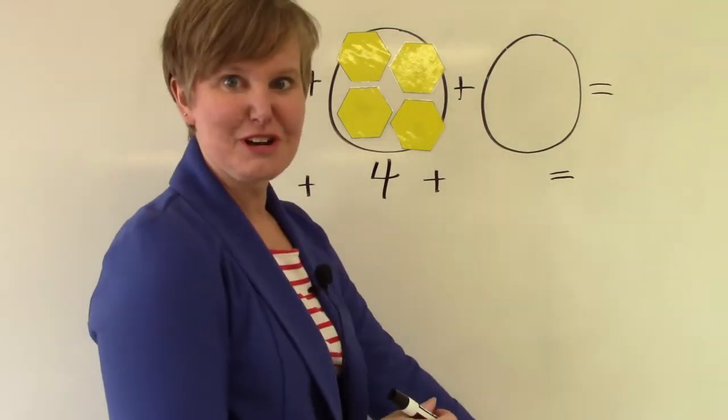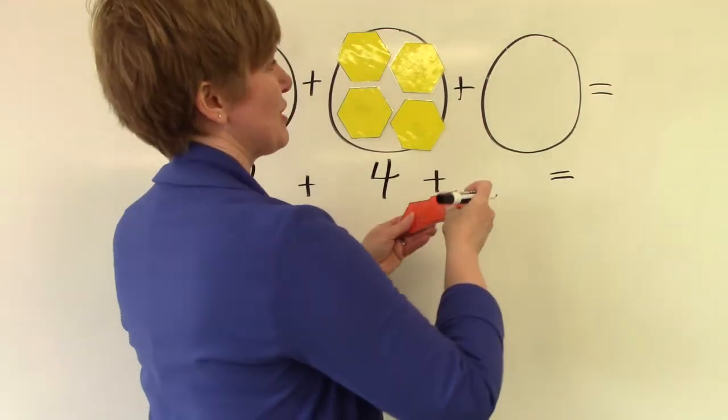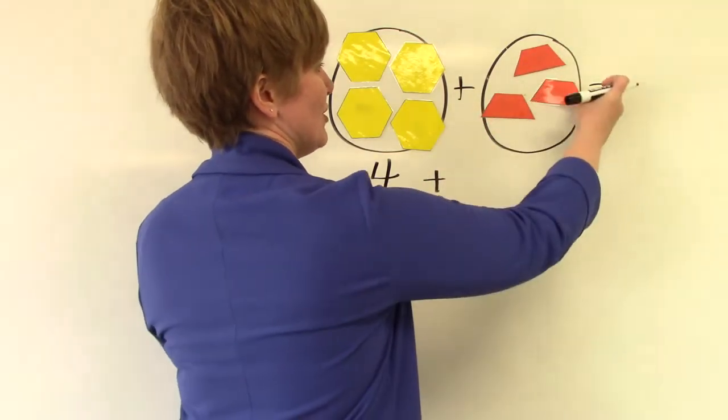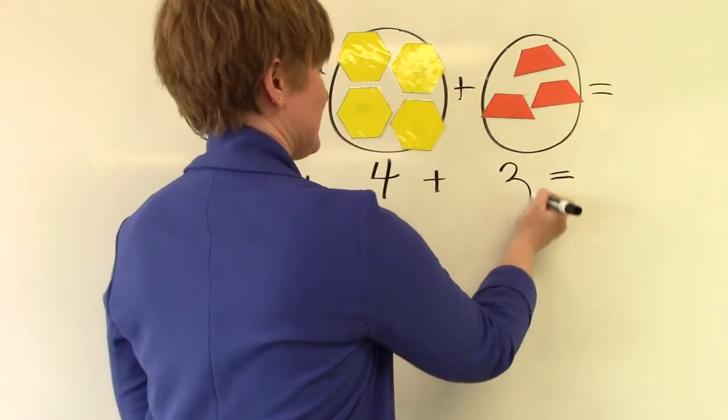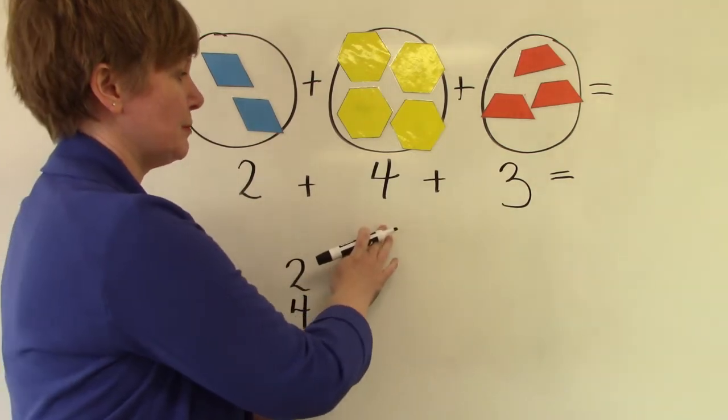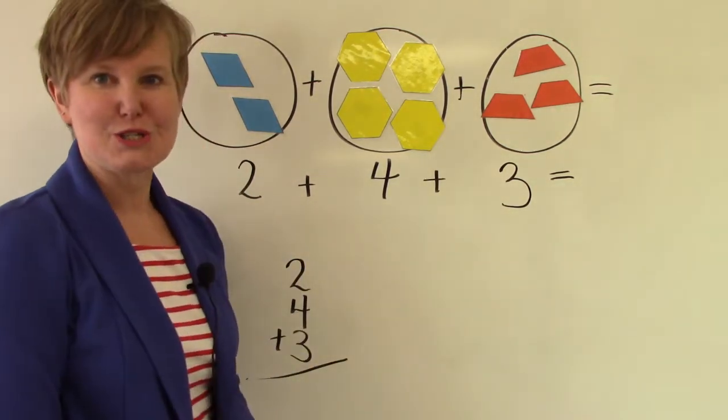And then I have three trapezoids. Let's put our trapezoids in our circle. One, two, three. Two plus four plus three.